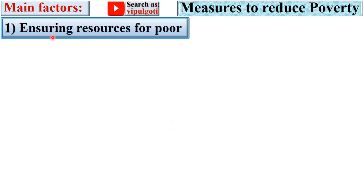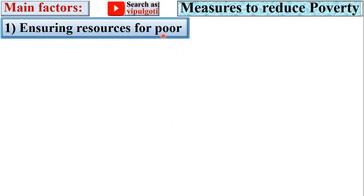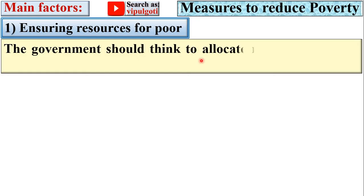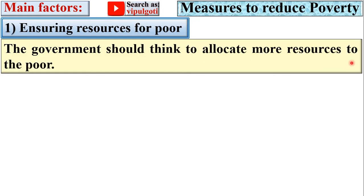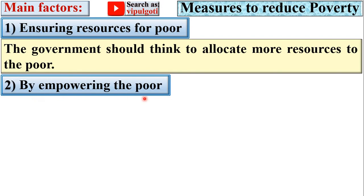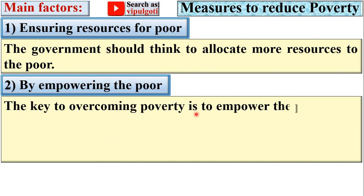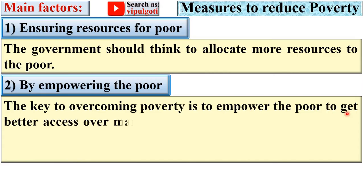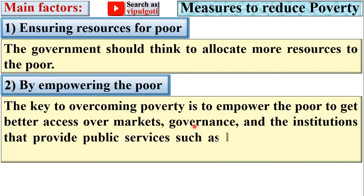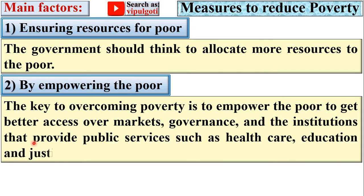First, ensuring resources for the poor. The government should think to allocate more resources to the poor. Next, by empowering the poor. The key to overcoming poverty is to empower the poor to get better access over markets, governance, and the institutions that provide public services such as healthcare, education, and justice.